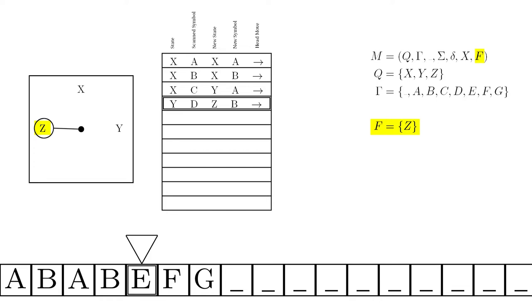The set of final states—note this is a set, not a single state. You can have multiple final states, and if the machine ever reaches any of them, it halts.